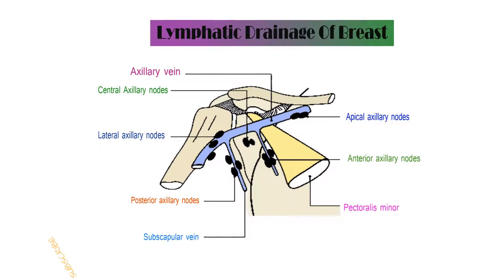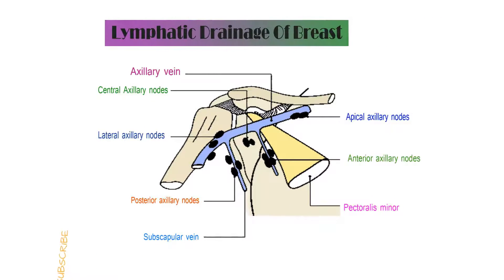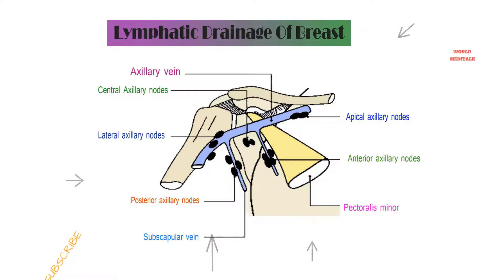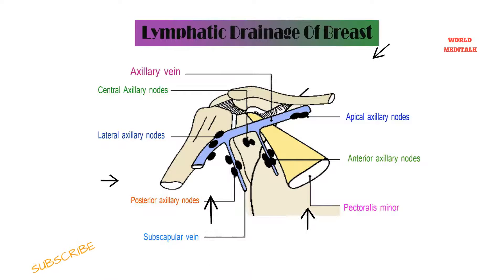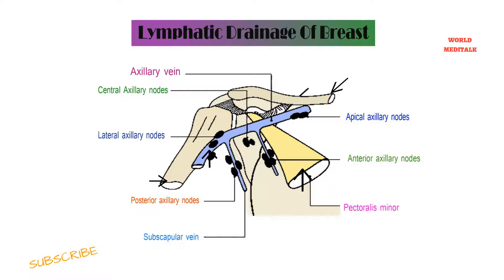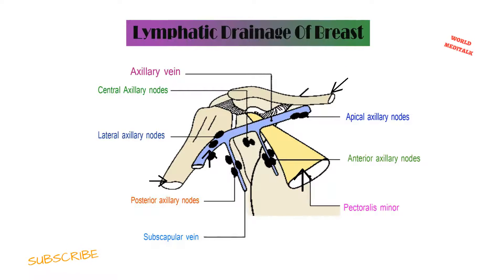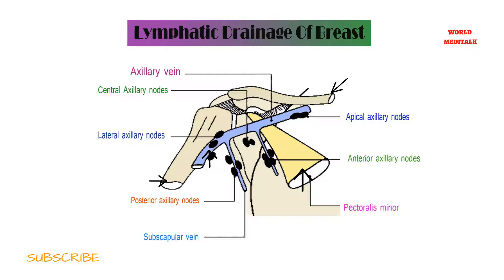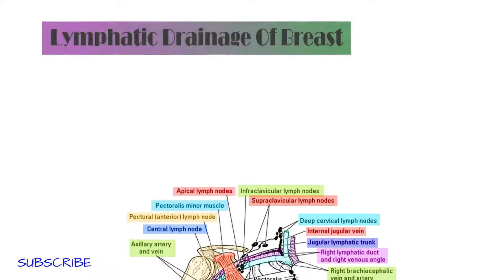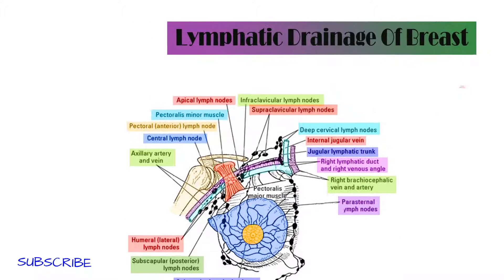To talk about the lymphatic drainage of the breast, we have to first identify five structures: the clavicle, humerus, sternum, pectoralis minor muscle, and the axillary vessels, and their locations. Then we will talk about the location of the lymph nodes.